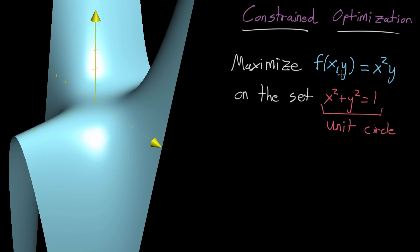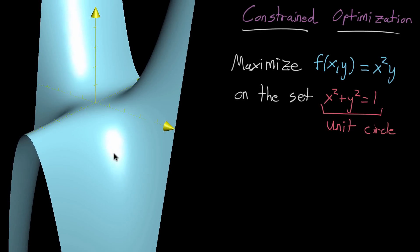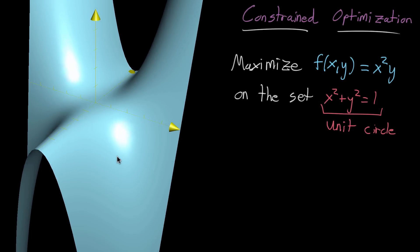So one way that you might think about a problem like this, you know you're maximizing a certain two variable function, is to first think of the graph of that function. That's what I have pictured here, is the graph of f of xy equals x squared times y.